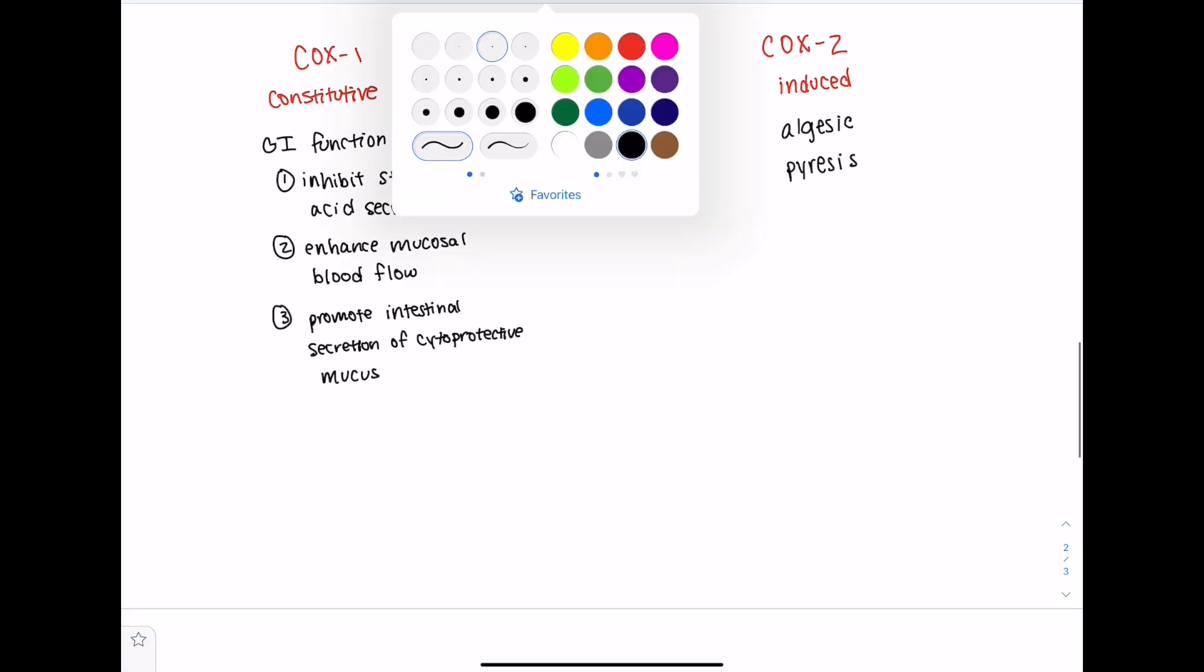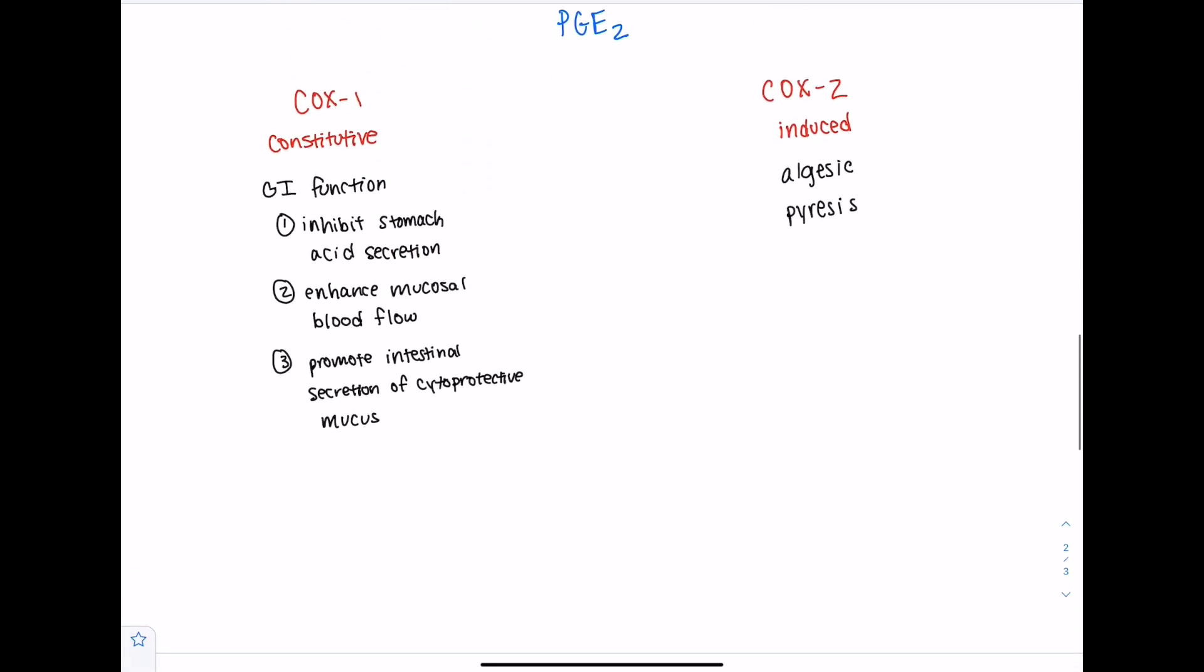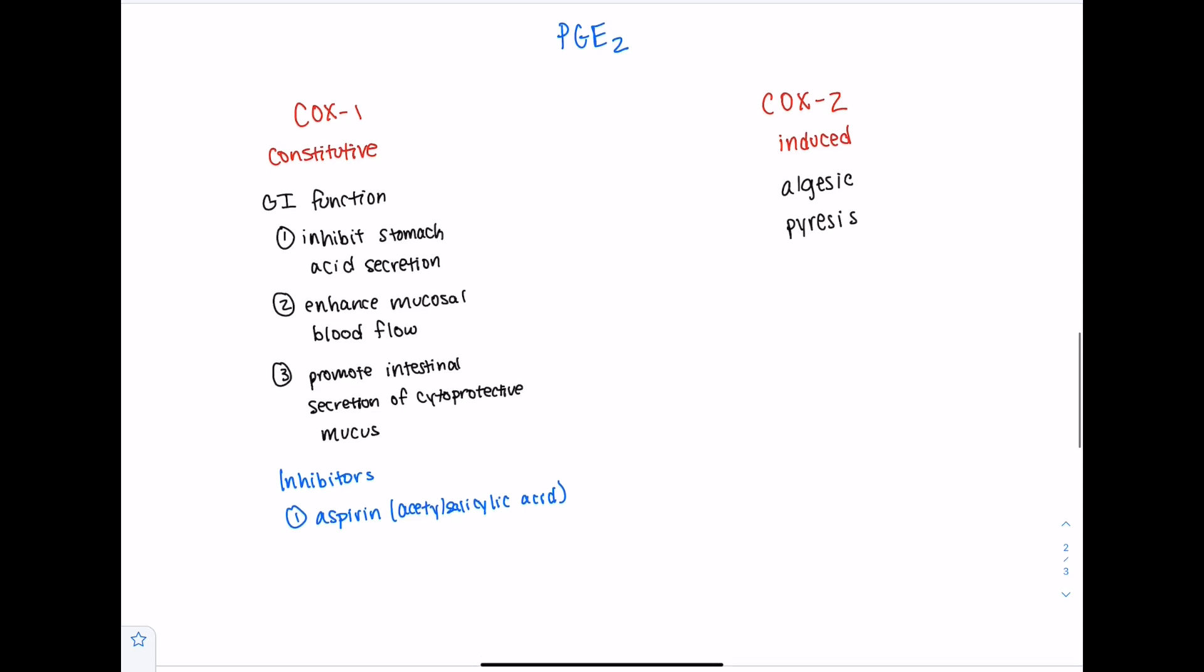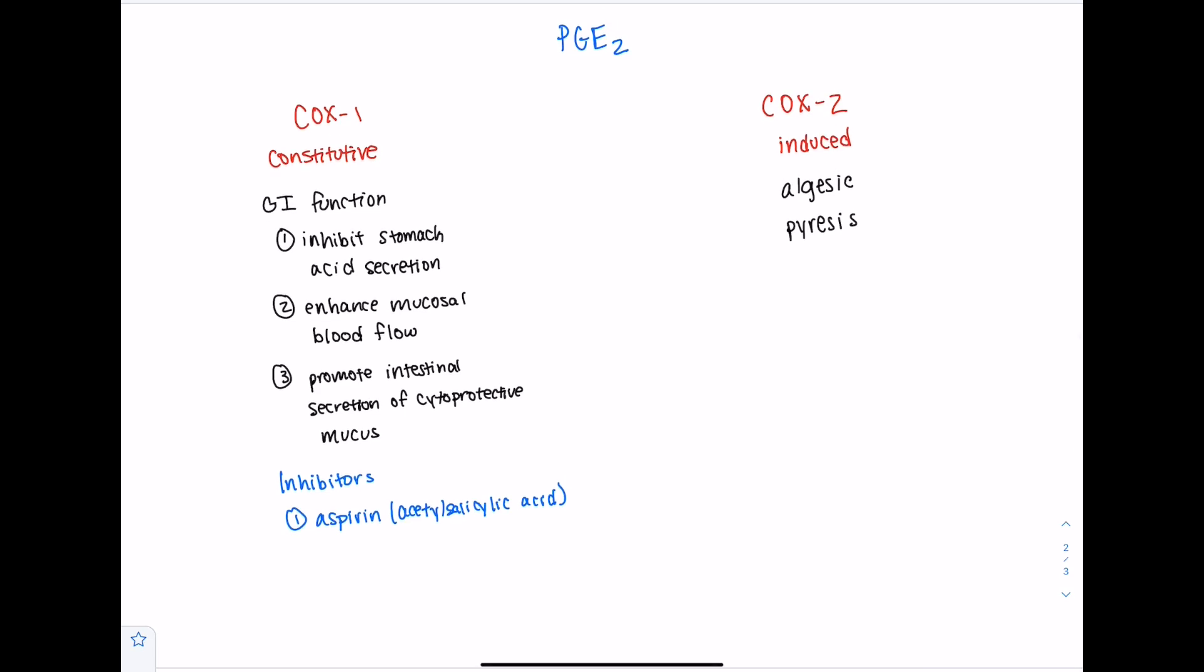So we're going to write down our inhibitors here. We'll write inhibitors. And we're going to put down aspirin here, also known as acetylsalicylic acid. So again, this is an NSAID, a non-steroid anti-inflammatory drug. It's inhibiting COX1. So it's going to prevent these PGE2 activities in the GI tract. So it can lead to some GI symptoms if you take too much.